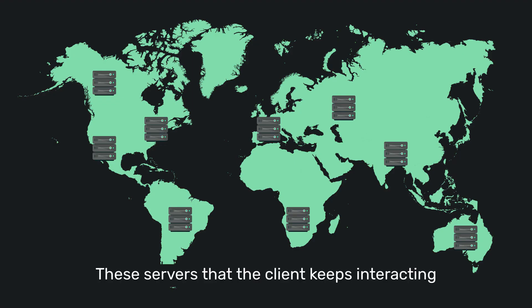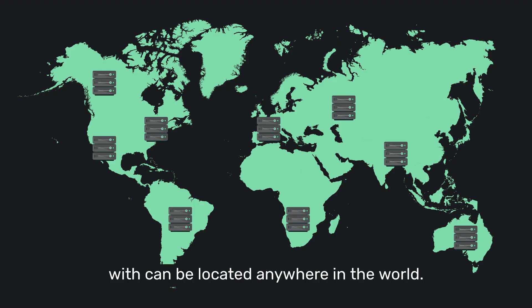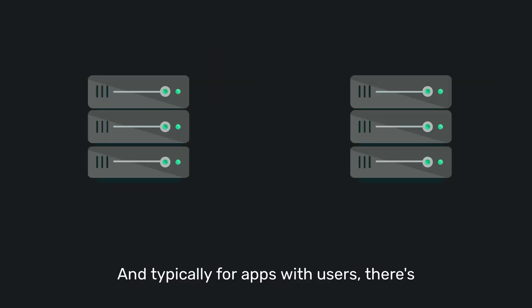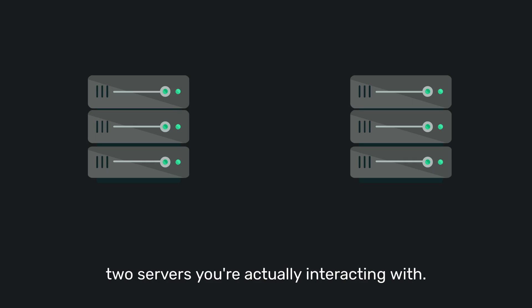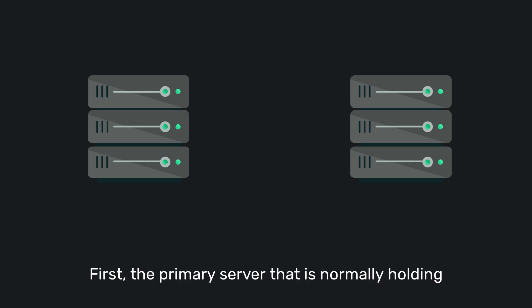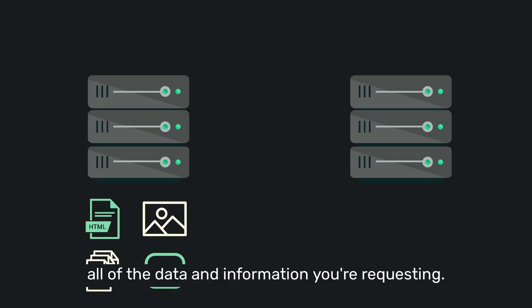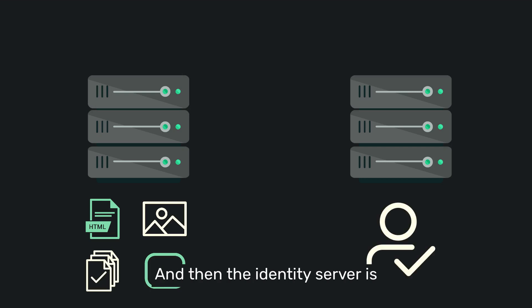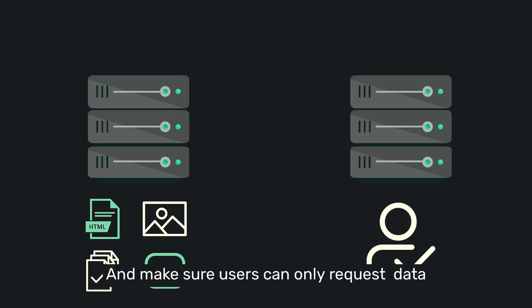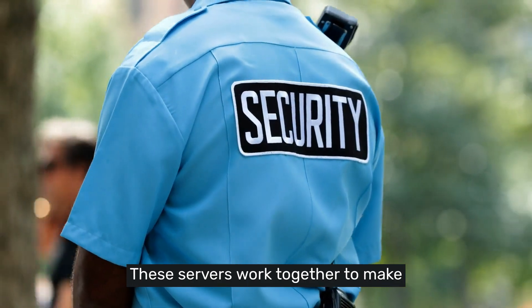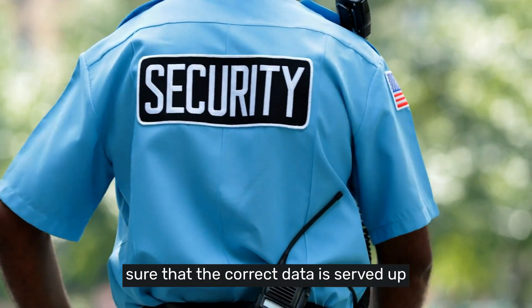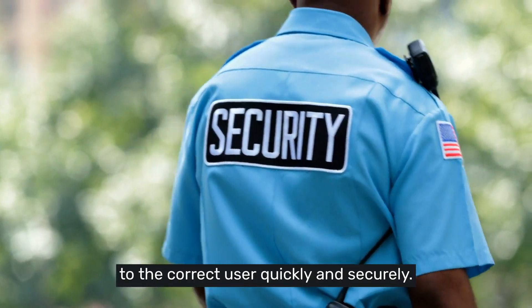These servers that the client keeps interacting with can be located anywhere in the world. Typically for apps with users, there are two servers you're actually interacting with: first, the primary server that is normally holding all of the data and information you're requesting, and then the identity server, which is there to authenticate the user and make sure users can only request data they have real permissions to access. These servers work together to make sure the correct data is served to the correct user quickly and securely.